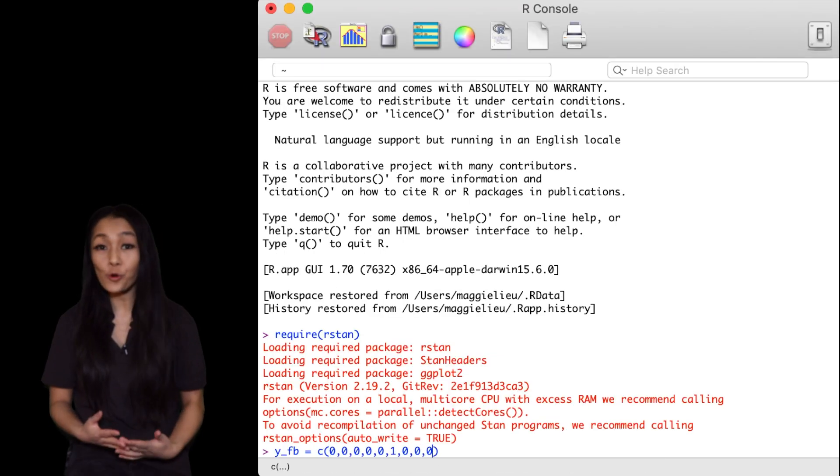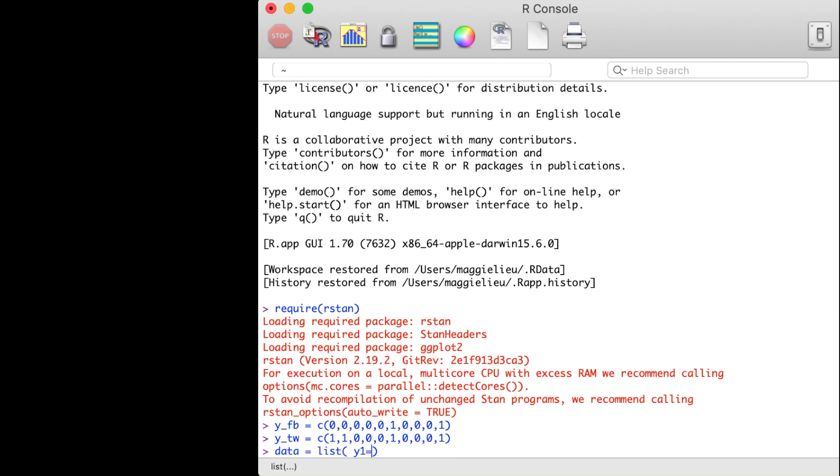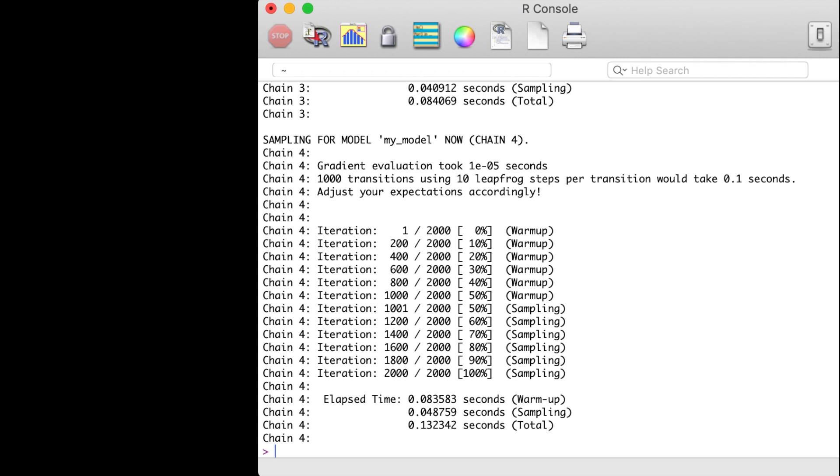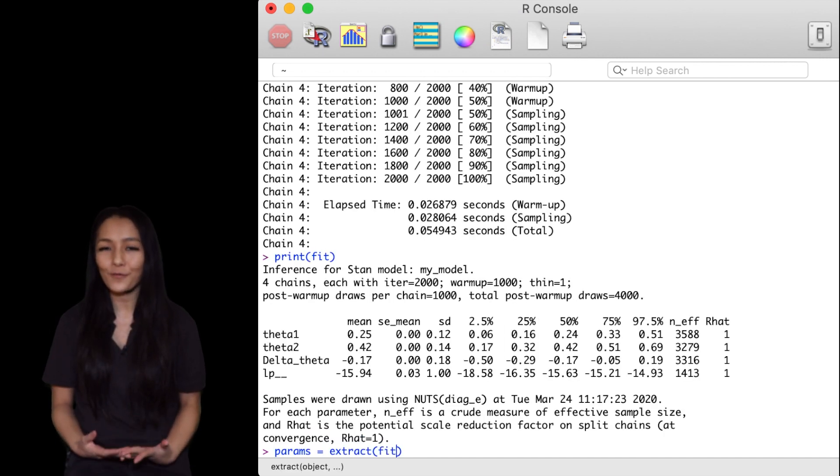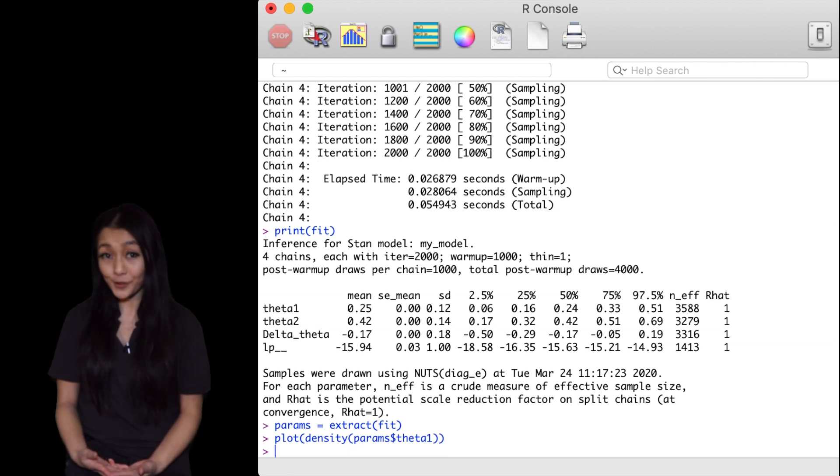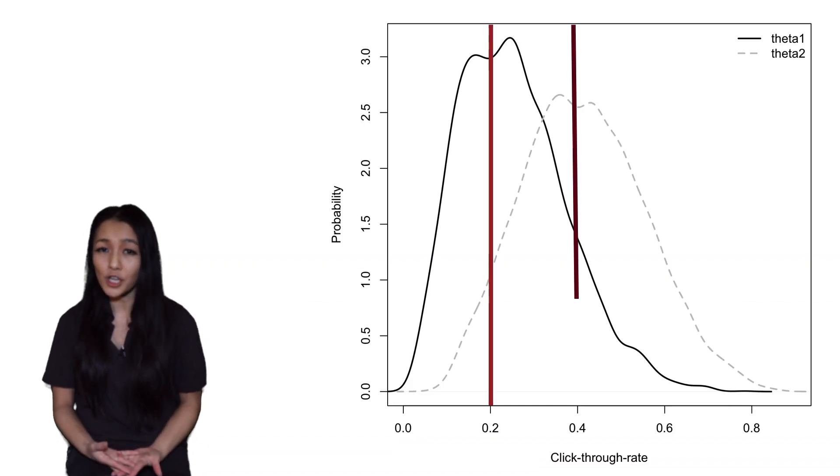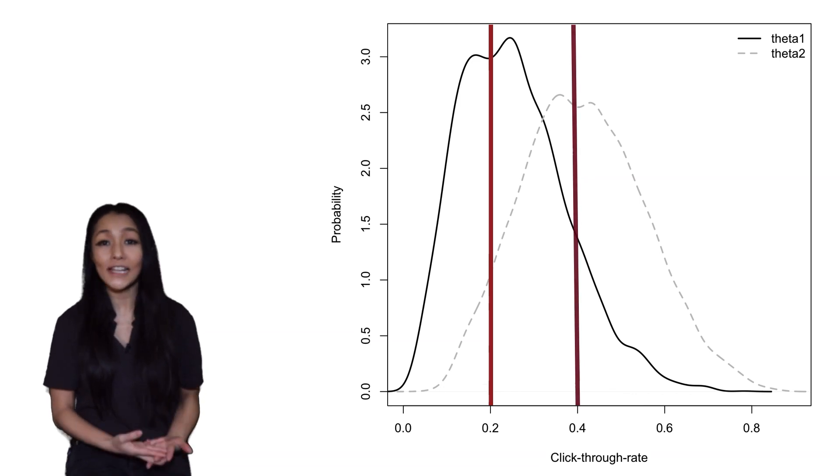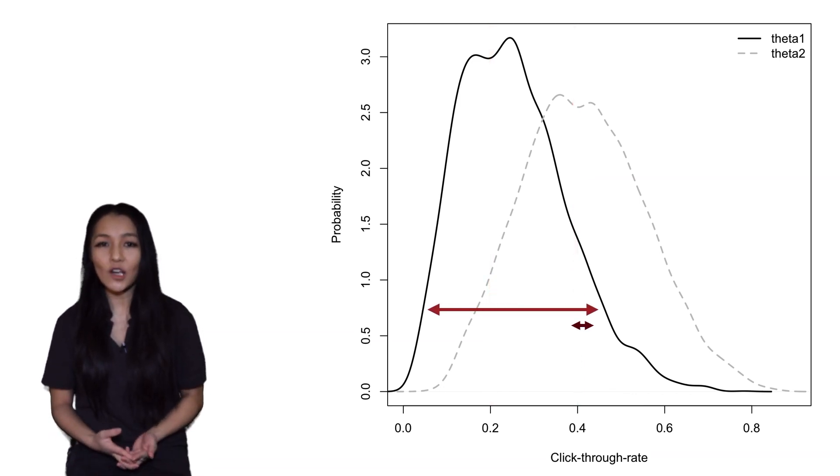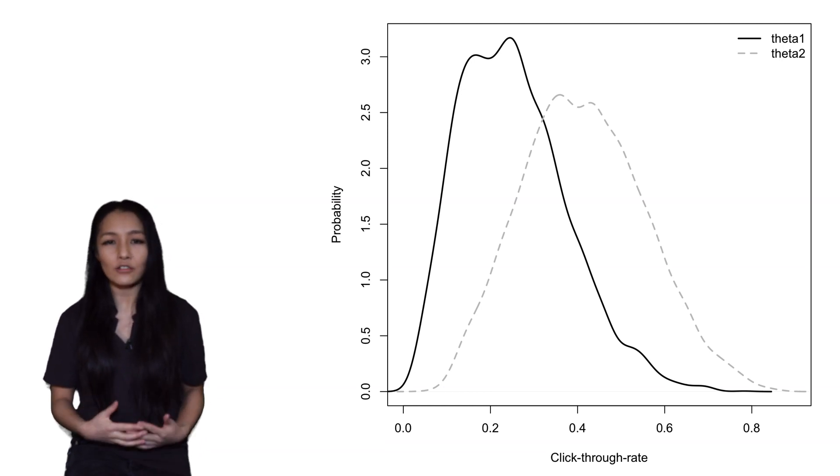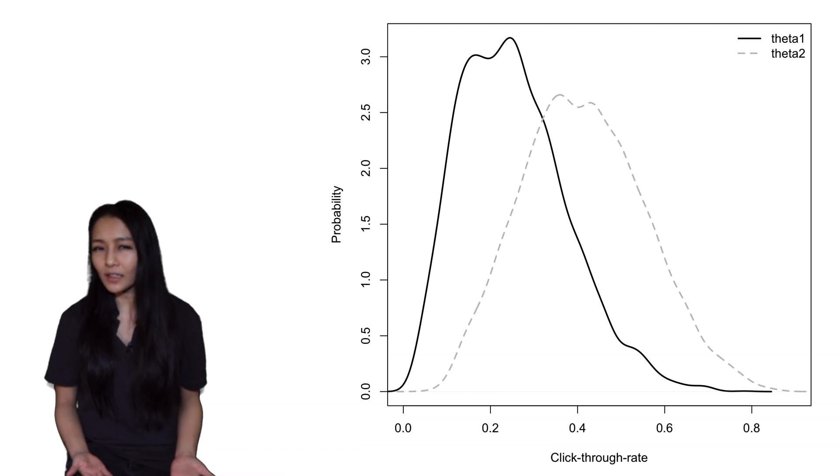Now we can fit the data to the model, letting Stan do all of the hard work. We can extract the parameters from the fit, and these are the posterior on the click-through rate. If we plot these distributions, you can see that even though the peak of the distribution corresponds to the analytical click-through rates, the actual uncertainty on them is still quite large. This is because the data is random, and given that the data set that we have is so small, we may have a very high click-through rate on Facebook but just out of simple randomness the first 10 didn't click.